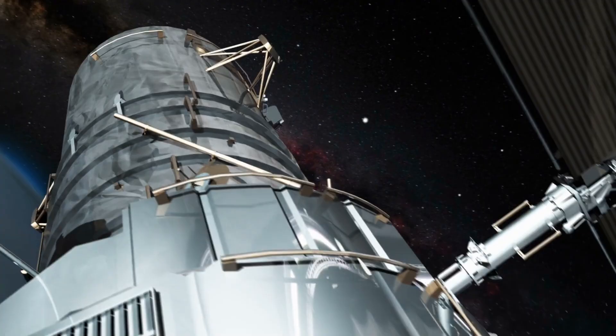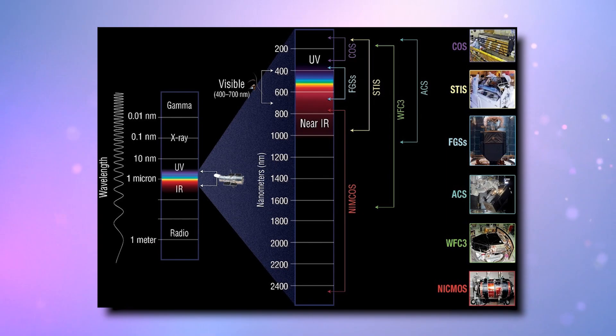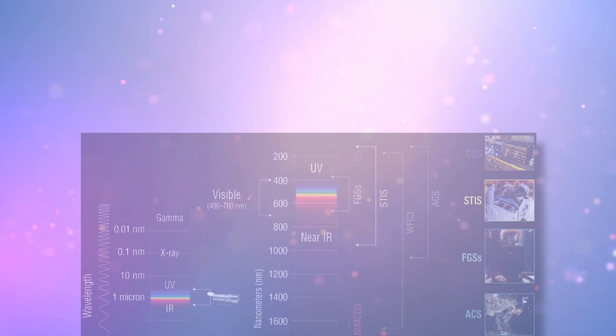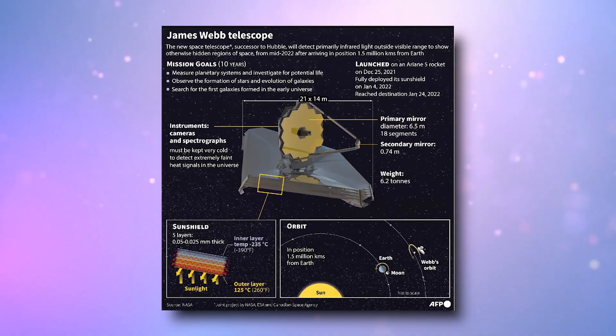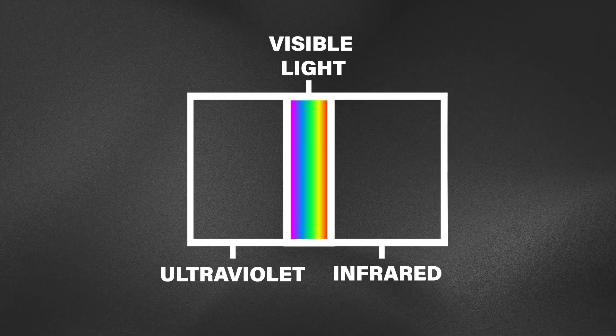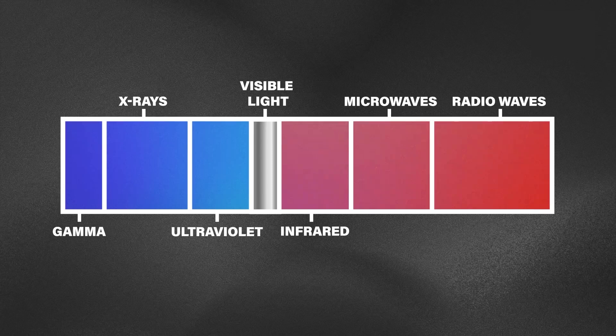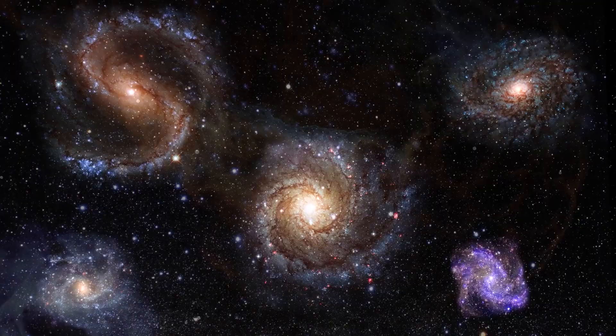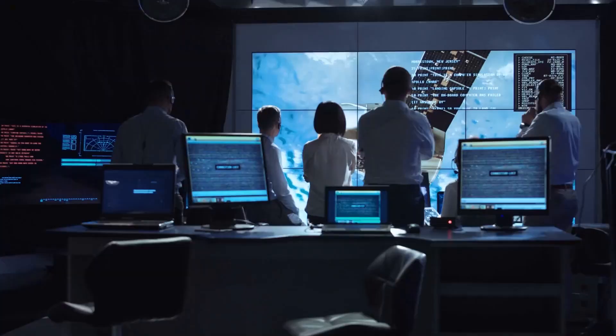The Hubble telescope primarily uses UV or ultraviolet rays as well as visible and near-infrared wavelengths to trace the presence of several elements in space. Contrary to this, the Webb makes use of its near and mid-infrared wavelengths. The application of infrared rays is really important to trace the roots of origin of galaxies, nebulae, and stars, providing astronomers with a clear understanding of the formation of several space entities in the past.